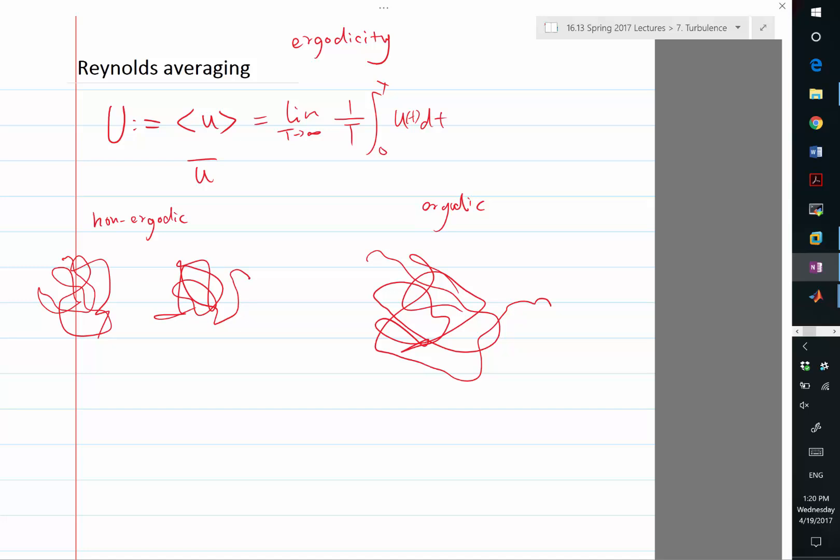Ensemble average means if you start from a collection of initial conditions, an infinite collection of initial conditions, as long as the infinite collection has a probability distribution that is non-singular. A singular distribution would be if you concentrate all samples from the same initial condition. A non-singular distribution means you spread out the initial conditions in the phase space.